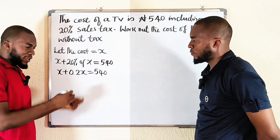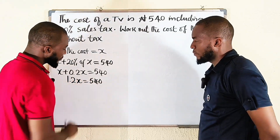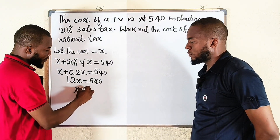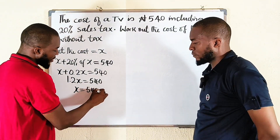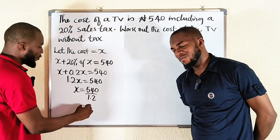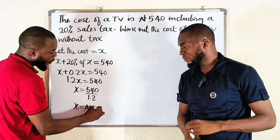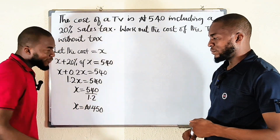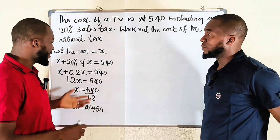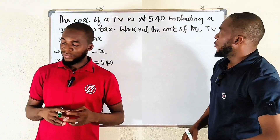Combining terms, we have 1.2X equal to 540. Divide both sides by 1.2, we get X equal to 540 divided by 1.2, which equals 450. Therefore X is equal to 450 Naira — that is the cost of the TV. Now let us see how we can solve it without using a calculator.